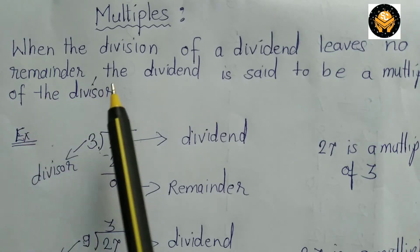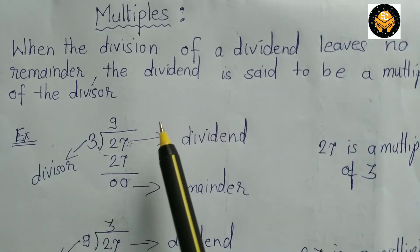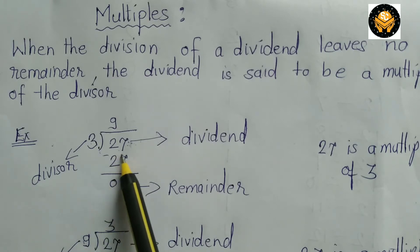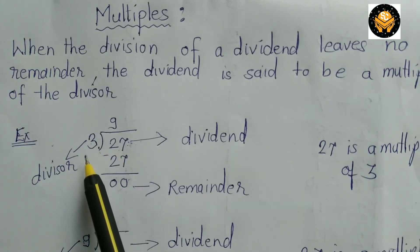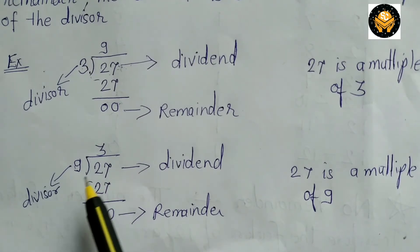Let's see the definition. When the division of a dividend leaves no remainder, the dividend is said to be a multiple of the divisor. Now let's take one example. Here in this example after dividing 27 by 3 we get remainder 0. It means this 27 is a multiple of 3. Take one more example. Here if you divide 27 by 9 again you will get remainder 0. It means 27 is a multiple of 9.